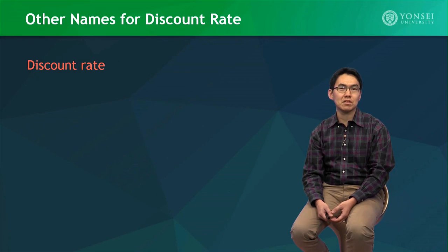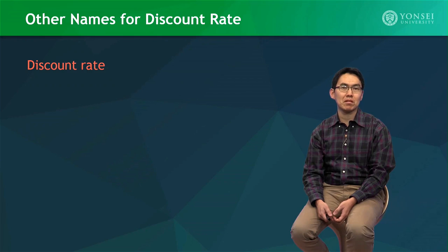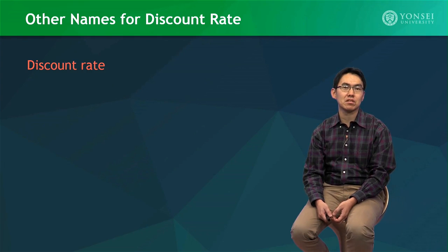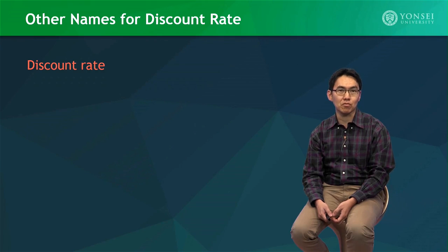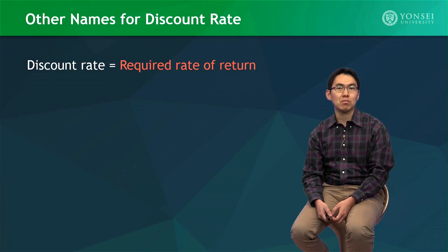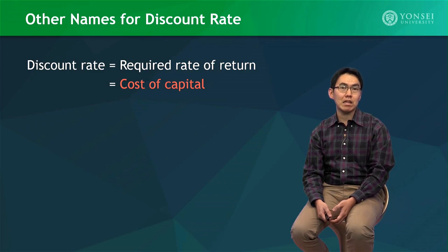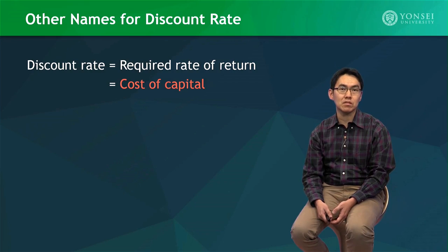To understand how the discount rate of a project is determined, we should first explore many topics which, at a glance, seem to be not so much related to the project discount rate. We start by thinking about different ways of referring to the discount rate. You may remember that in many problems, they use the term required rate of return instead of the discount rate. Many people also use the term cost of capital to refer to the discount rate.